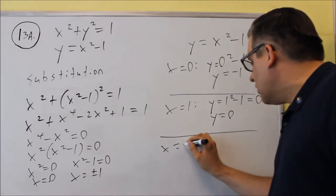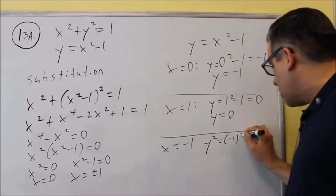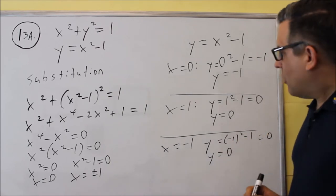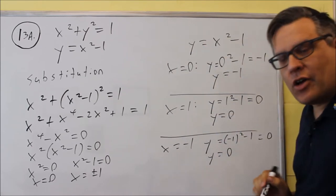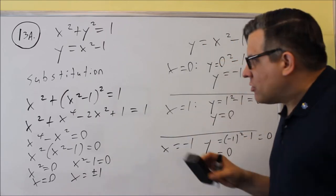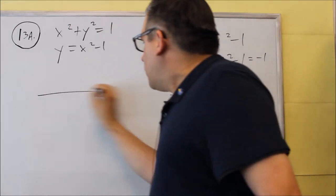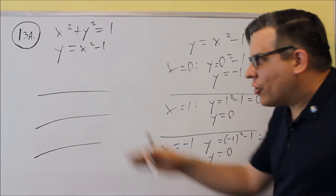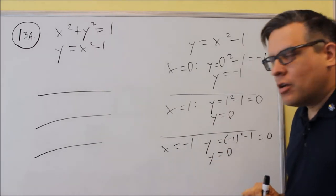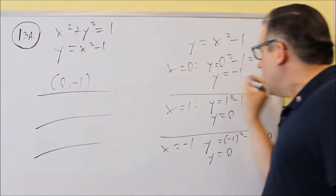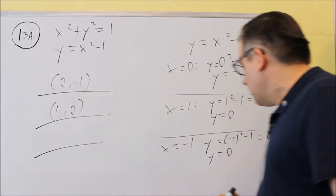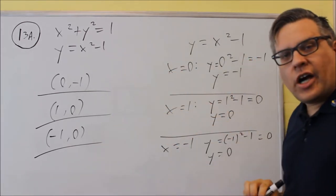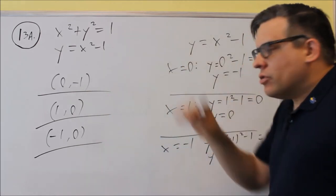For x equals negative 1: y equals negative 1 squared minus 1, which gives y equals zero. So I have x equals zero with y equals negative 1, x equals 1 with y equals zero, and x equals negative 1 with y equals zero. The answers are written as ordered pairs. There are three blanks on the test for the three solutions: (0, −1), (1, 0), and (−1, 0). So that's three different points — that's the answer using the substitution method.